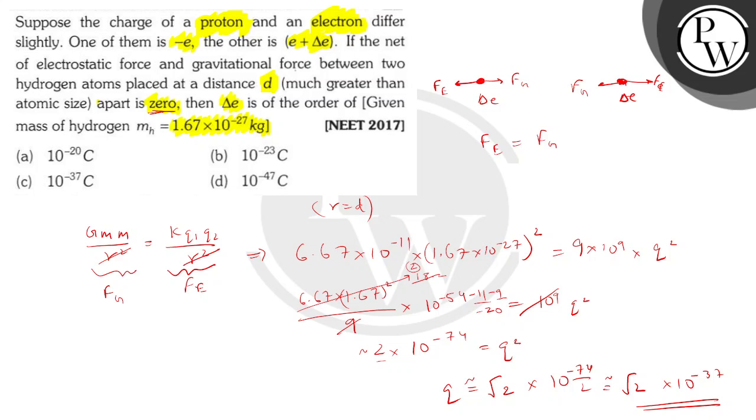So, they have asked us only the order of Δe. So, the order of Δe will be of 10^-37. So, we can put this value in. As you can see, option C matches this: 10^-37.